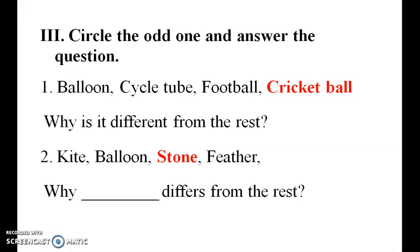Circle the odd one out. First group: balloon, cycle tube, football, cricket ball — the odd one is cricket ball. Second group: kite, kettle, feather, stone — the odd one is stone. So feather is correct.